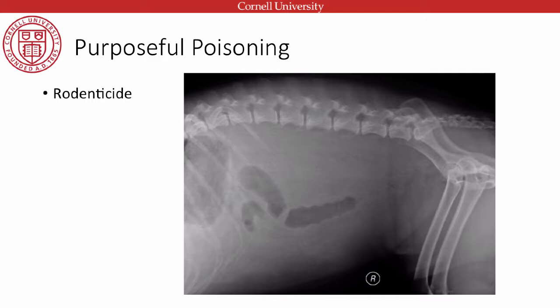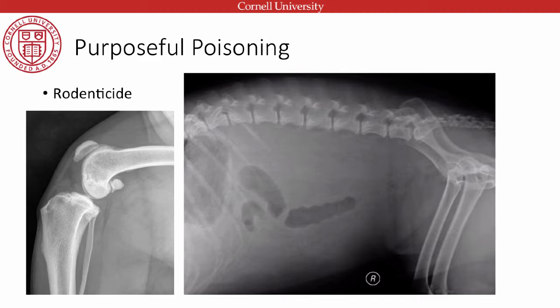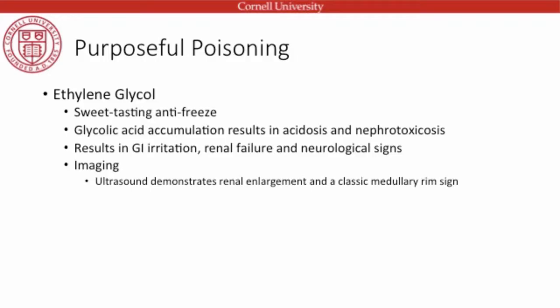This rodenticide case shows heme abdomen — loss of serosal detail with a pendulous abdomen, confirming effusion rather than a thin animal. This is heme abdomen secondary to rodenticide toxicosis. An example of joint effusion in the stifle shows swelling cranially displacing the fat pad, similar to what you'd see with a cruciate injury. The stifle nicely delineates effusion, allowing us to confirm hemoarthrosis in the joint. In the tarsal joint you may see bulging of the joint capsule as well.